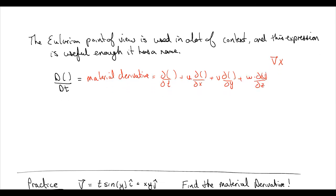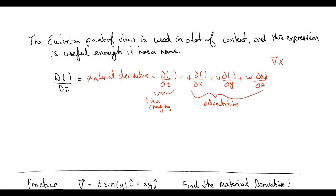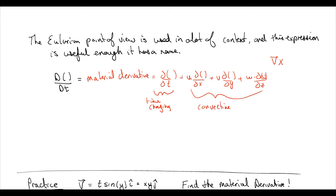We can break this down with labels. The first part is the time-changing component, and the remaining spatial terms are what we call the convective acceleration.